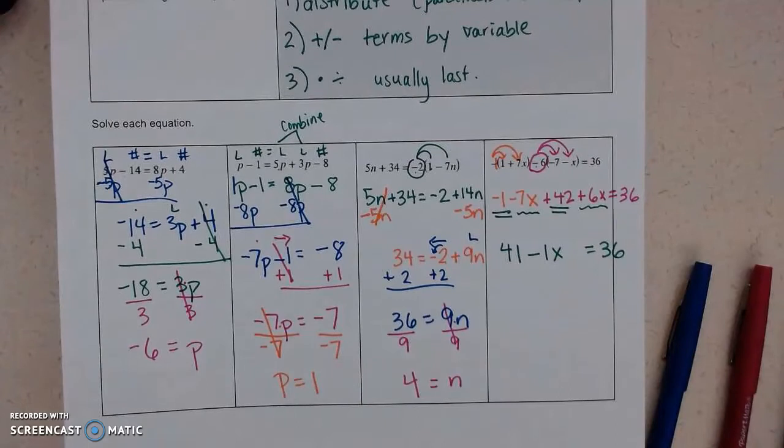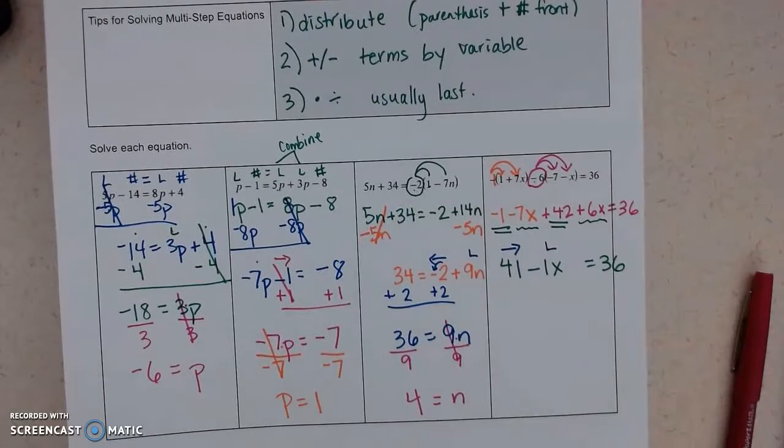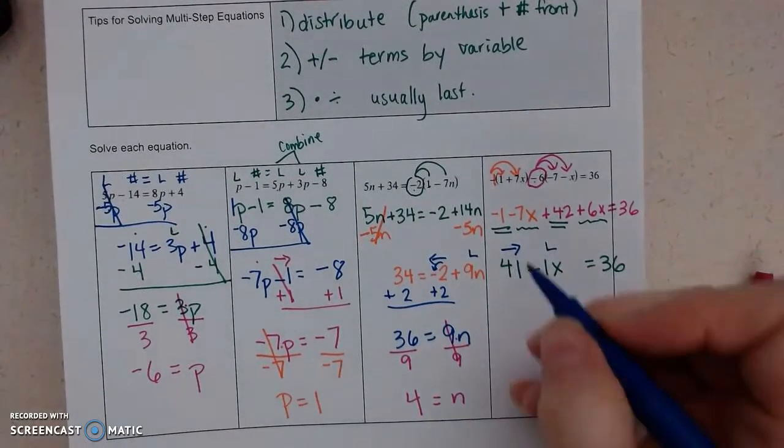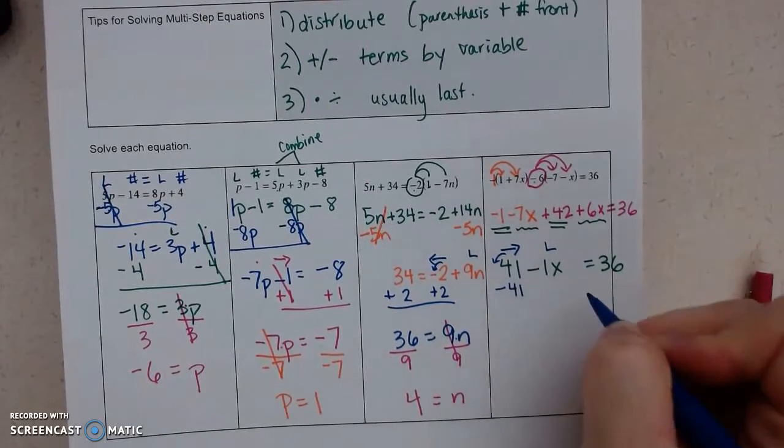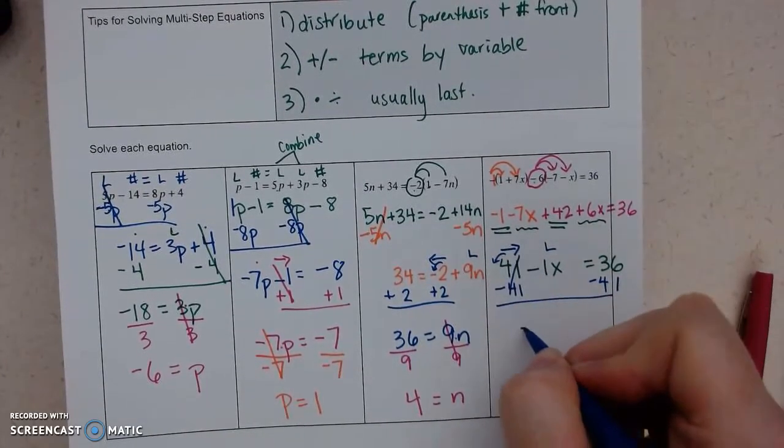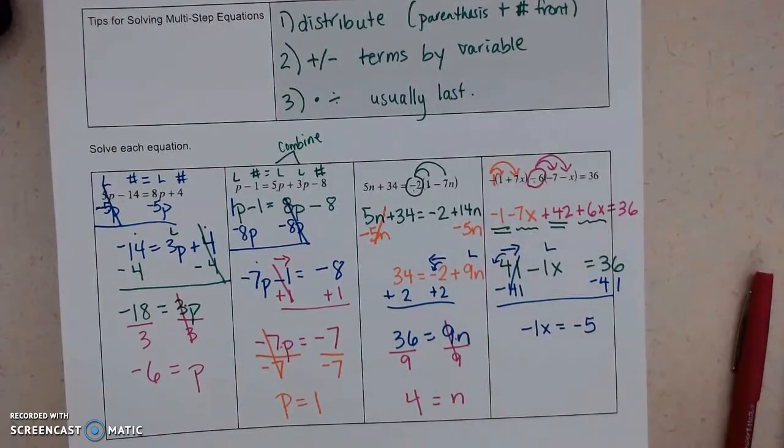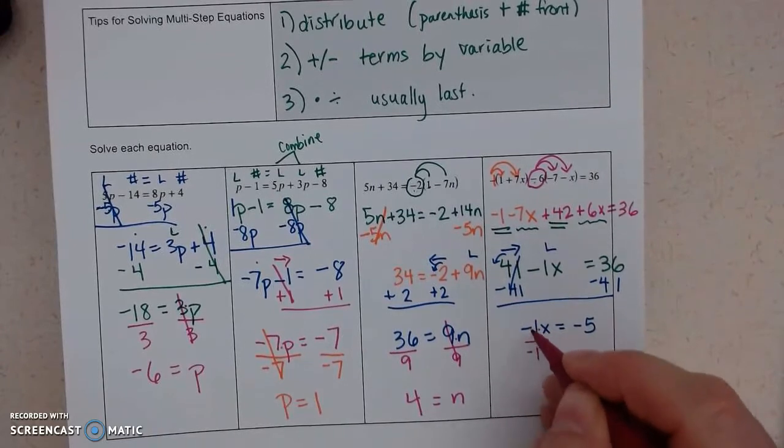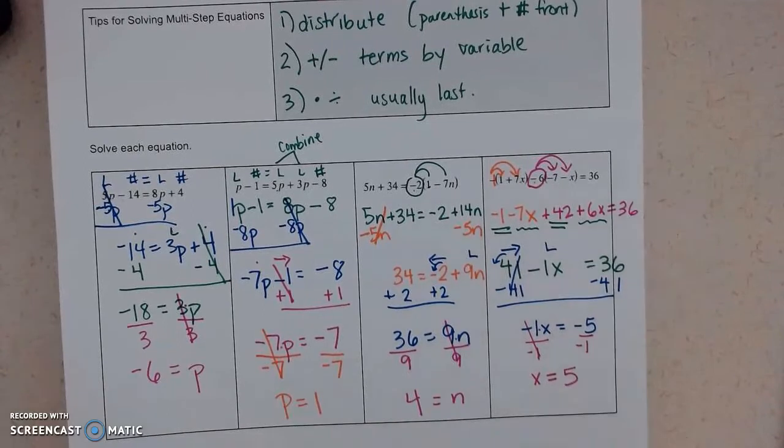So now you'll notice we only have the letter on the left, so I have to move the number to the right side. So the 41 is positive, so I'm going to subtract it. Remember, you always look in front. So this is negative 1x equals negative 5. And then the last step is you're going to divide by that negative 1. So x equals positive 5.